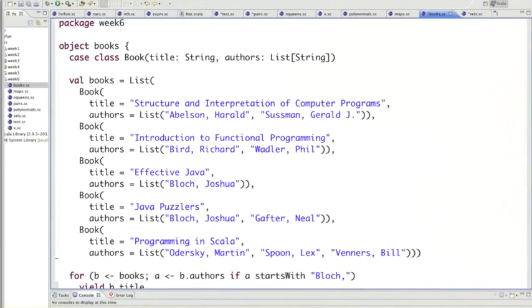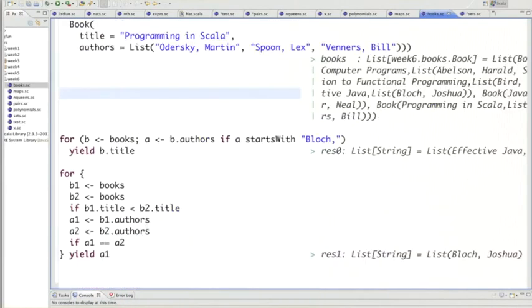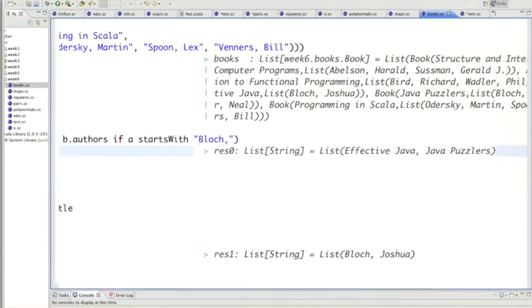Let's do one of these queries in the worksheet. I have here the first kind of query. I demand all the authors whose name starts with Bloch. If I run that, what I get back here is the two books in my list that Joshua Bloch has written: Effective Java and Java Puzzlers.